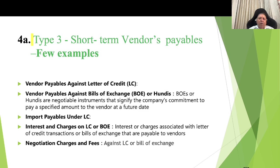Type 3 — short-term vendors payable. Examples include vendors payable against LC (letter of credit), vendors payable against bills of exchange or hundis — negotiable instruments signifying the company's commitment to pay a specified amount to the vendor at a future date — import payables under LC, interest and charges on LC or bill of entry, interest or charges associated with letter of credit or bill of exchange transactions payable to vendors, and negotiation charges and fees against LC or bill of exchange.